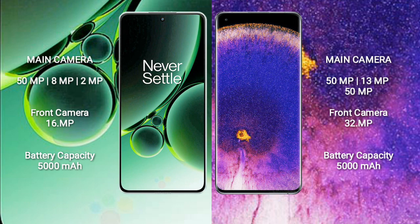OnePlus Nord 3 has a 5000mAh battery with 80W fast charging support. Oppo Find X5 Pro also has a 5000mAh battery with 80W fast charging support.